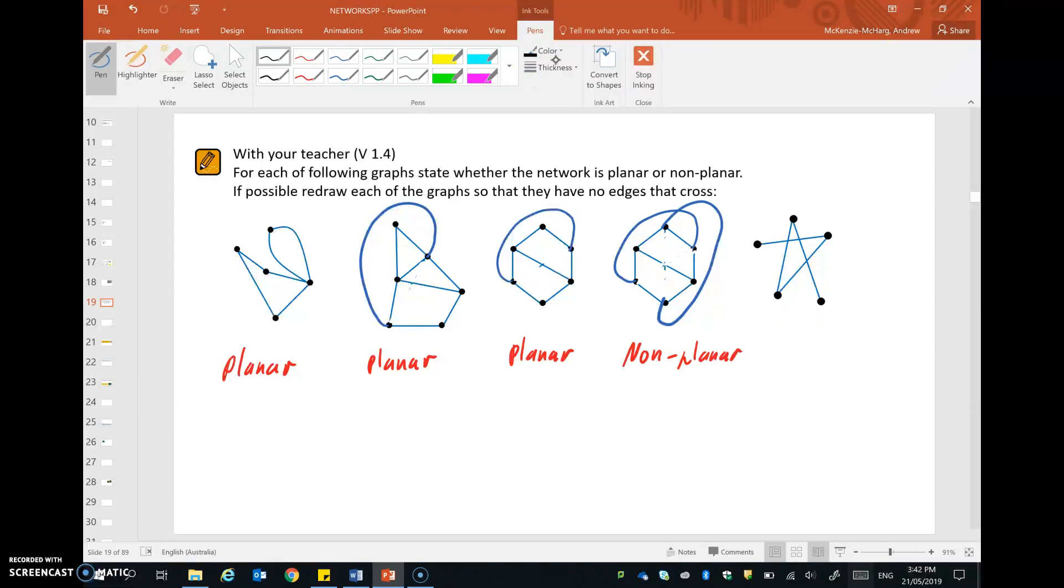Last one. Let's erase this edge and redraw it around here. Okay, and can we do it with this one? Go around here and yes, we can redraw this to be topologically equivalent with no crossing over. This graph is clearly planar as well.